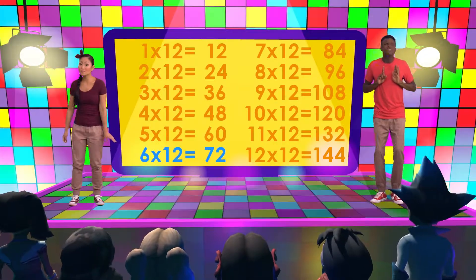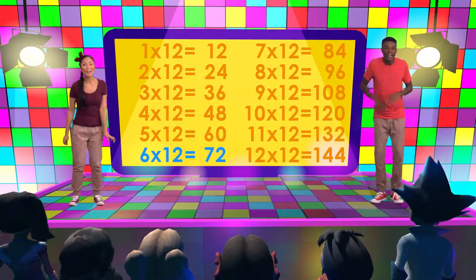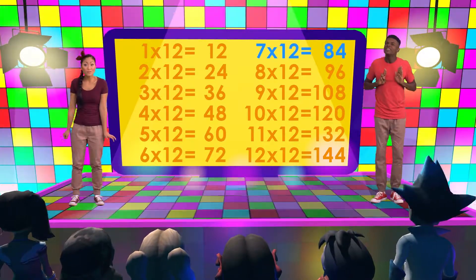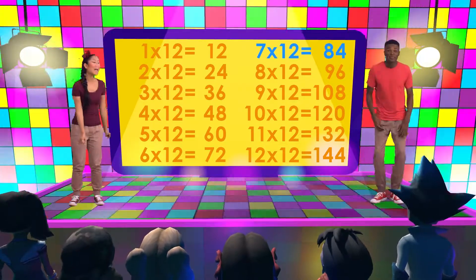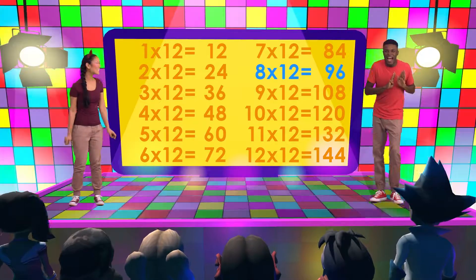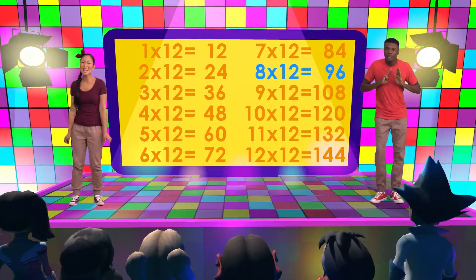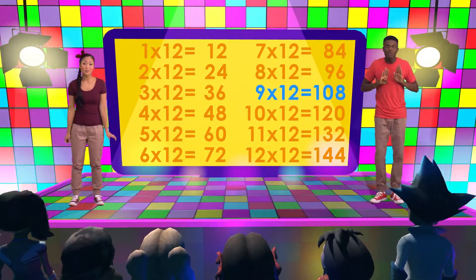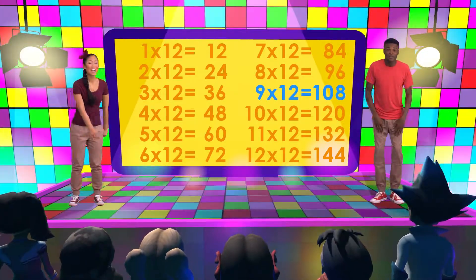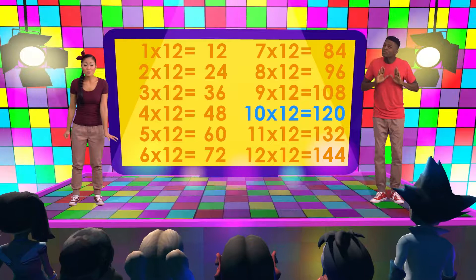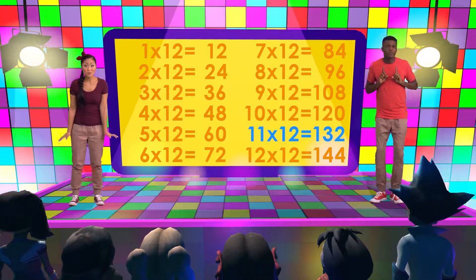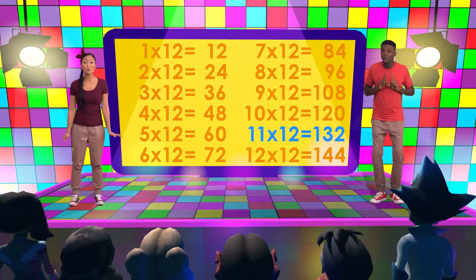6 times 12 is 72. 7 times 12 is 84. 8 times 12 is 96. 9 times 12 is 108. And 10 times 12 is 120.